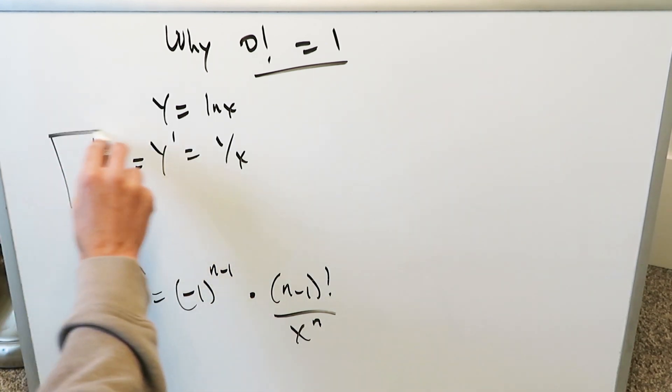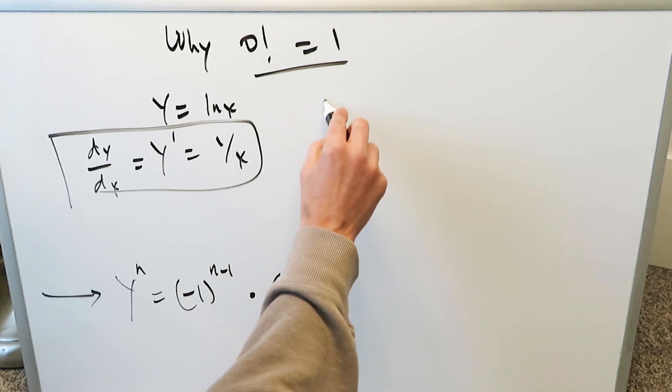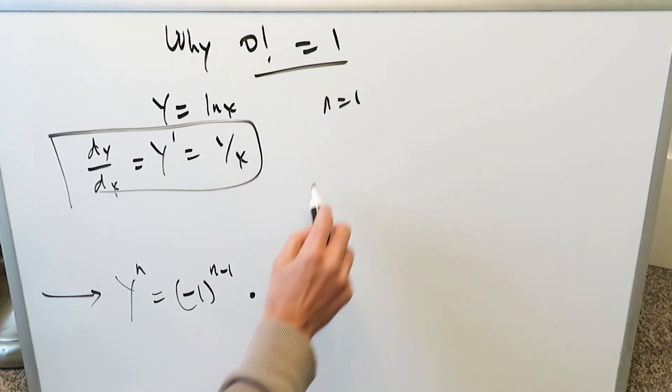Now look, you're looking at this template. If I were to tell you, utilize this template right here where n is equal to 1, what would you get? You're looking at the first order derivative, you're doing minus 1 to the power of 1 minus 1, because n is equal to 1, you're running it through this template.